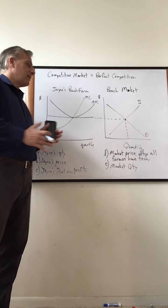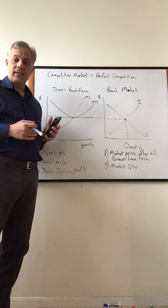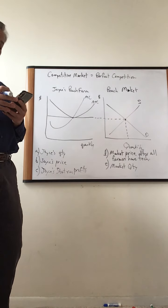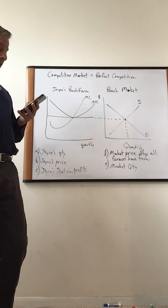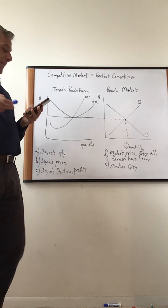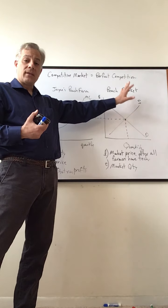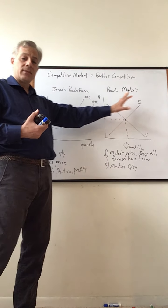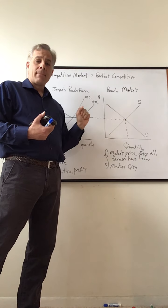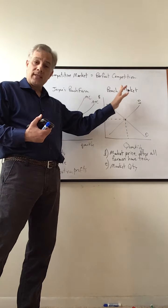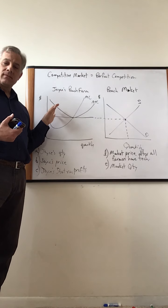Just knowing that, we know we're going to have a graph situation like this. For peaches and for nectarines, this is our market. Since the first question is about Joyce and the peach industry, I have the peach market — which is all peach farmers. It could be called the peach industry, so market and industry are interchangeable. And then we have the individual firm, which is Joyce's peach farm.